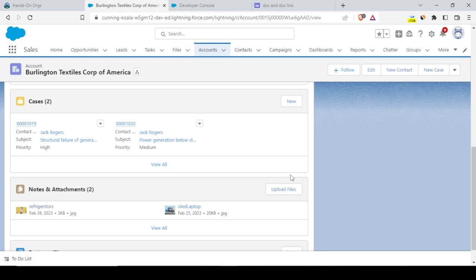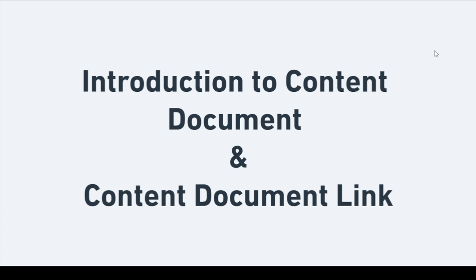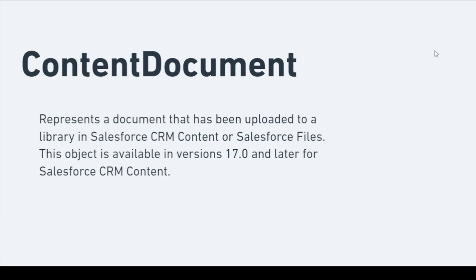We'll understand what ContentDocument and ContentDocumentLink are, and their relation to our scenario. A ContentDocument represents a document that has been uploaded to a library in Salesforce CRM Content or Salesforce Files. Basically, anything we attach as a file can be retrieved as a ContentDocument. This object is available from API version 17 onwards.